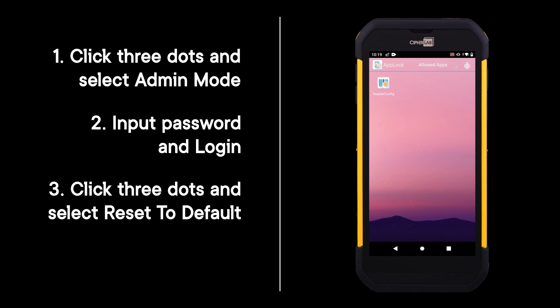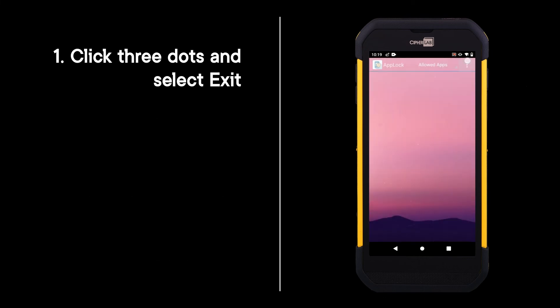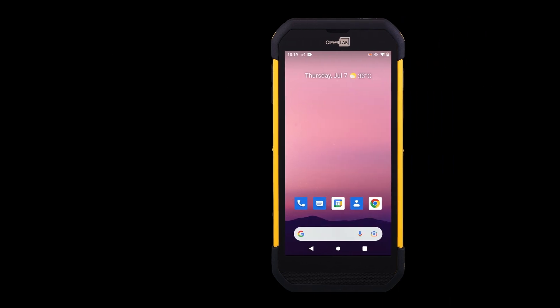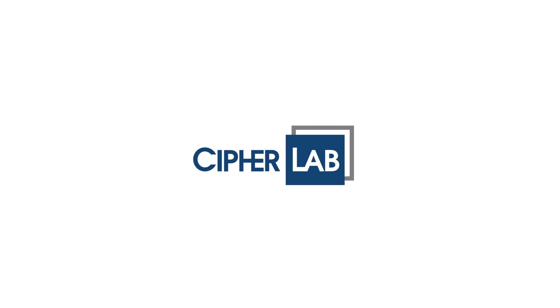Click the three dots and select Reset to Default. Click Yes, then click the three dots and select Exit. App Lock has been reset and disabled.